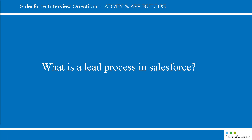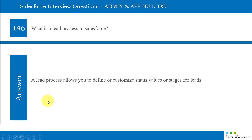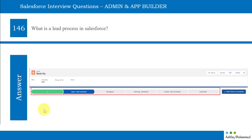What is the lead process in Salesforce? Every company has its own process. We have to configure the process — how many steps are there from when the lead comes into our Salesforce system to when it's converted into a customer. A lead process allows us to define organized status values or stages. Multiple different companies can have multiple different stages based on their businesses. For example, for a bank where someone is inquiring for a home loan, the stages might be: New, Open, Not Contacted, In Progress, Working, Contacted, Closed Not Converted, and finally Converted.